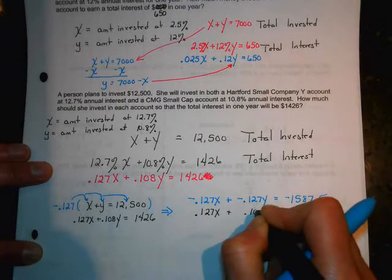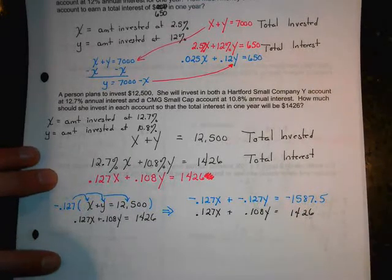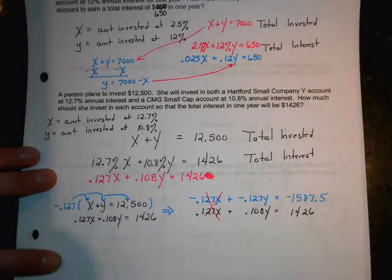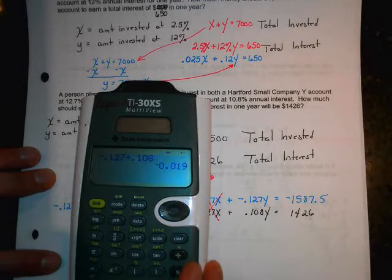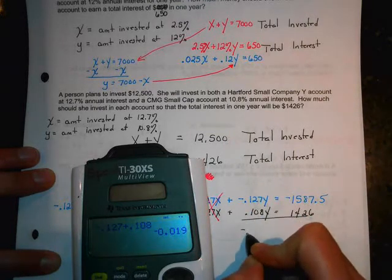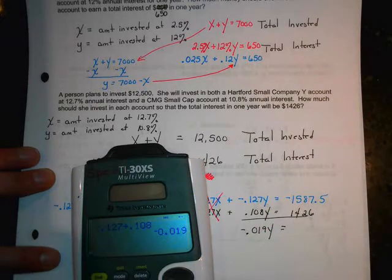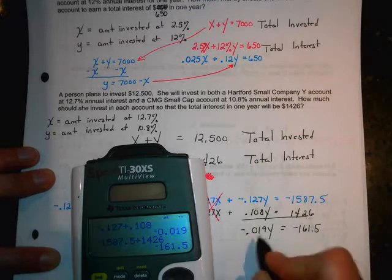It looks ugly, but it's not going to be bad, because here's the equation we didn't touch. So, now, when we add these together, these cancel, because they're equal to 0. So, let's pull out our calculator. We have negative 0.127 plus 0.108. So, that's the number that's going to be in front of my Y value. And on the other side of the equation, we'll have negative 1587.5 plus 1426. We'll have negative 161.5.